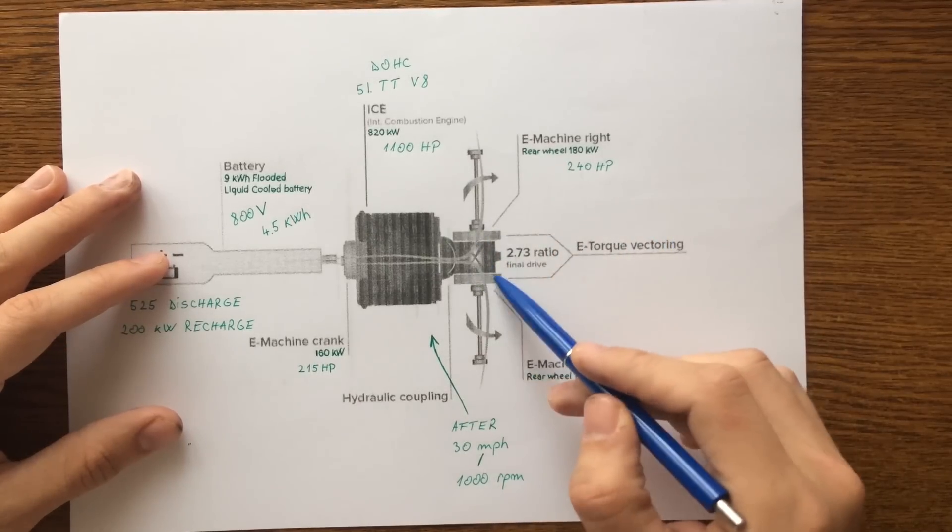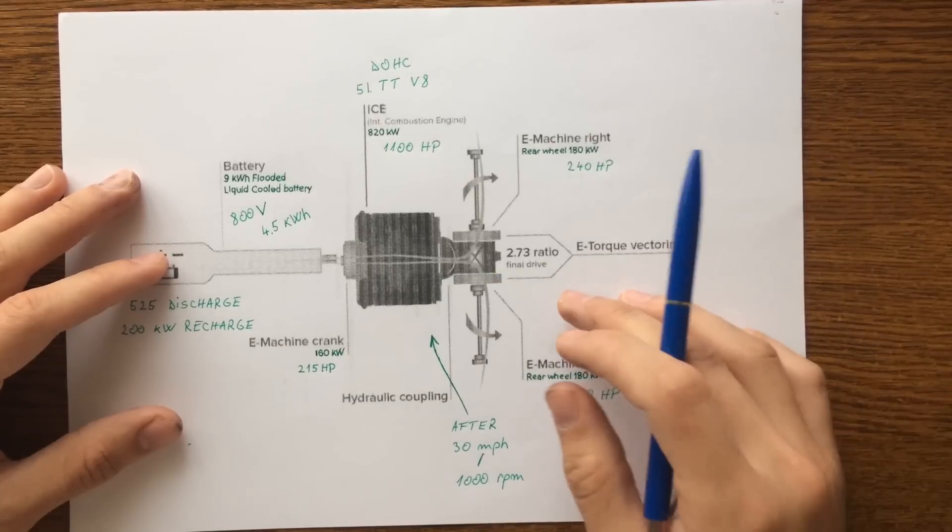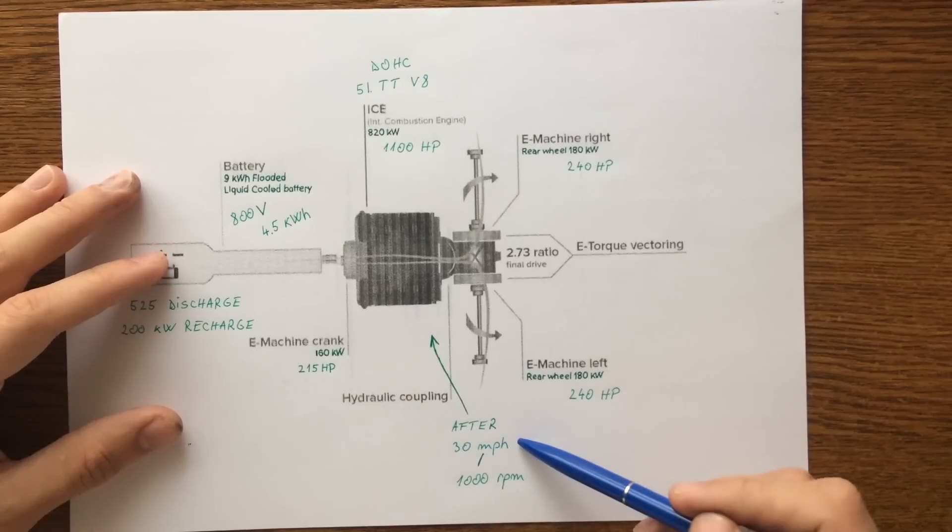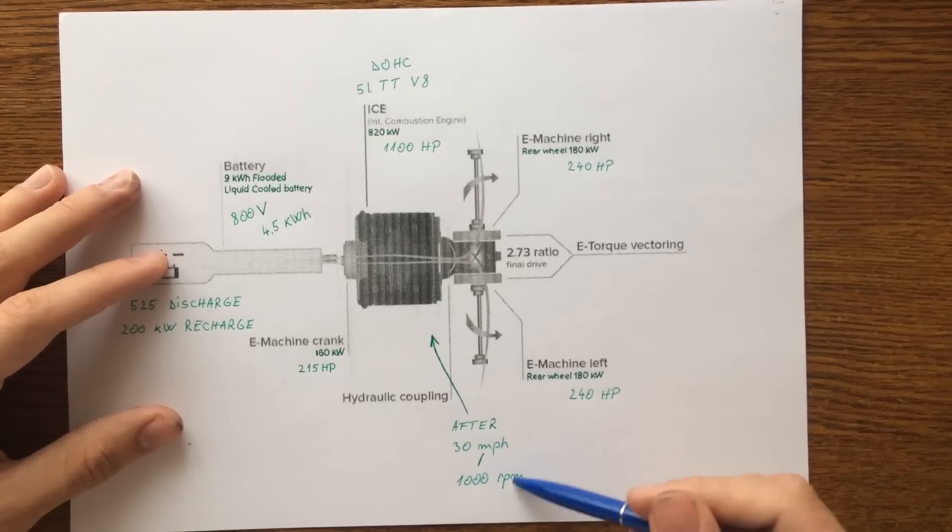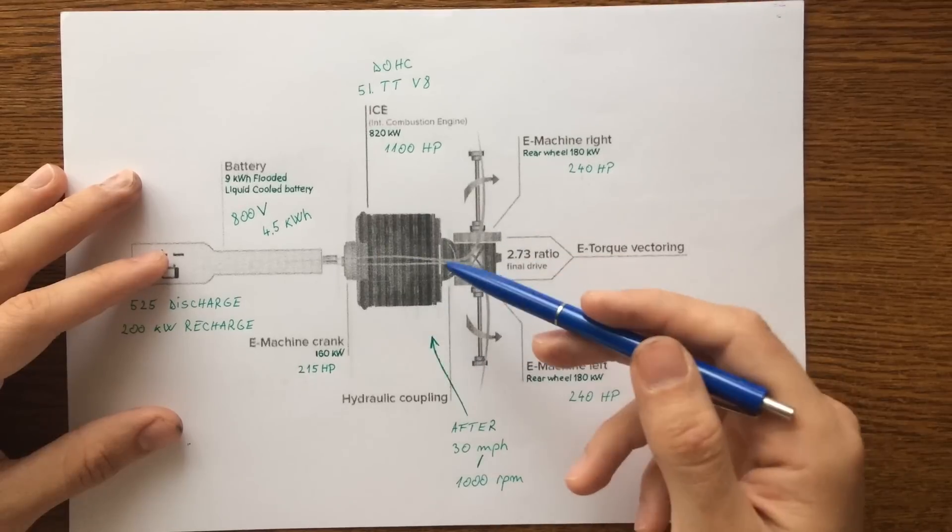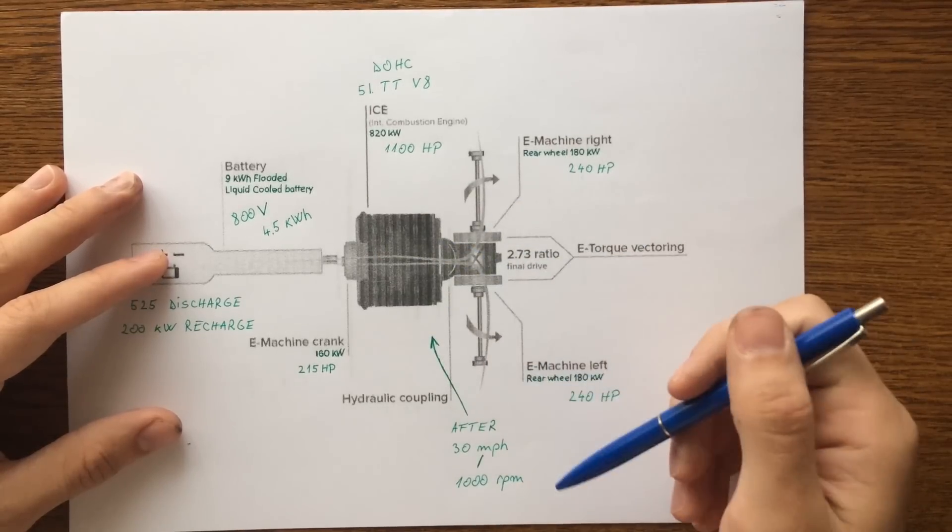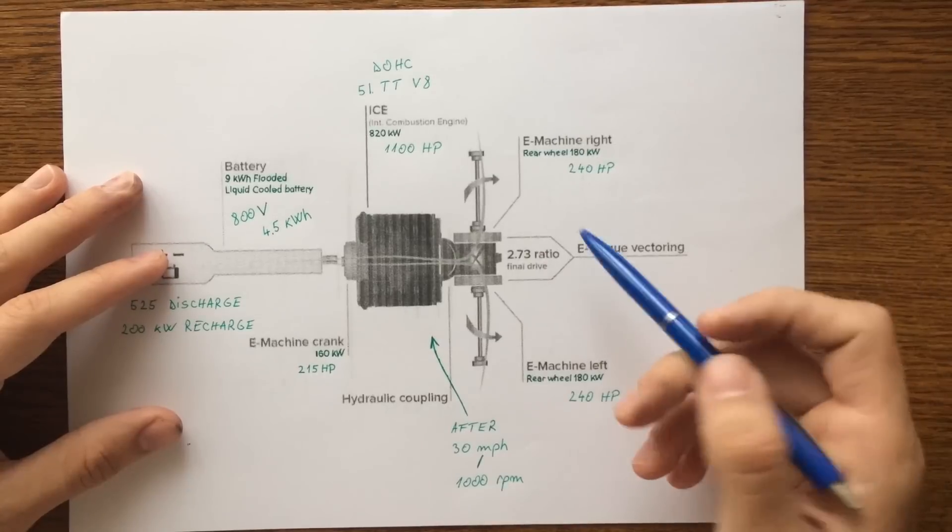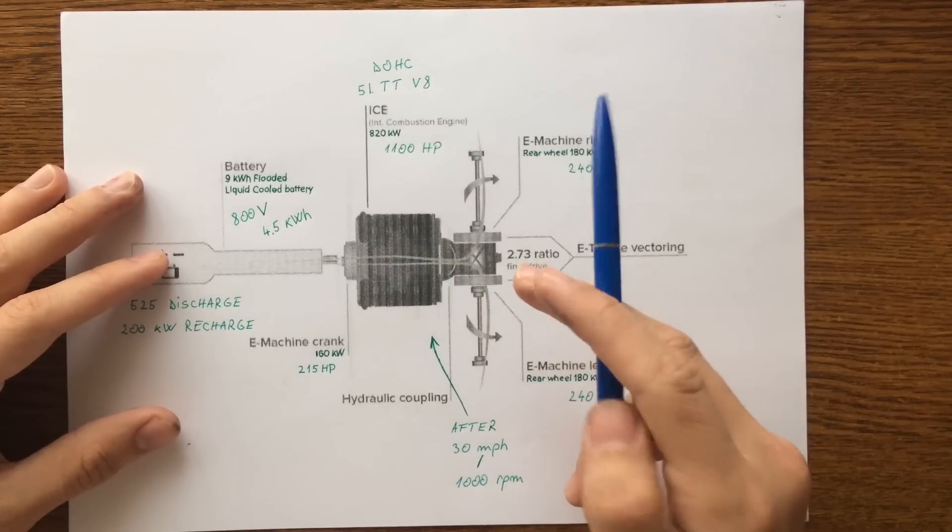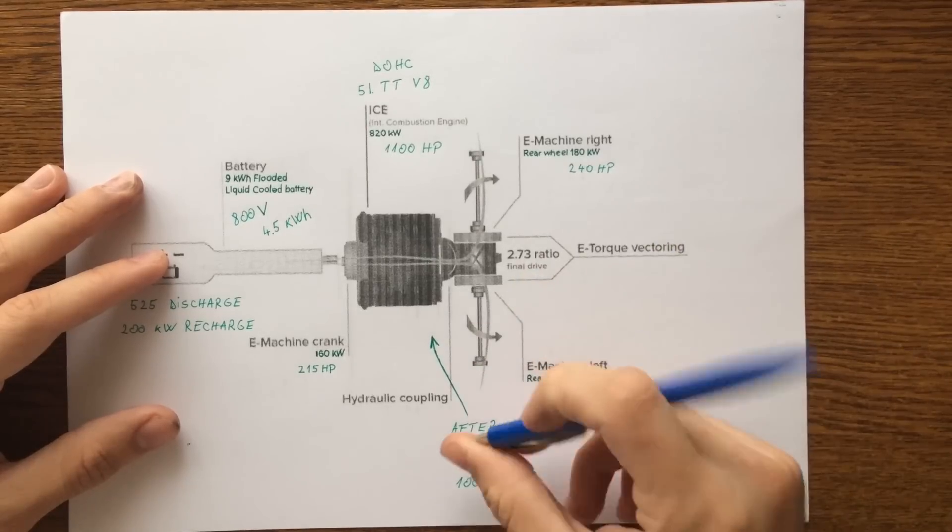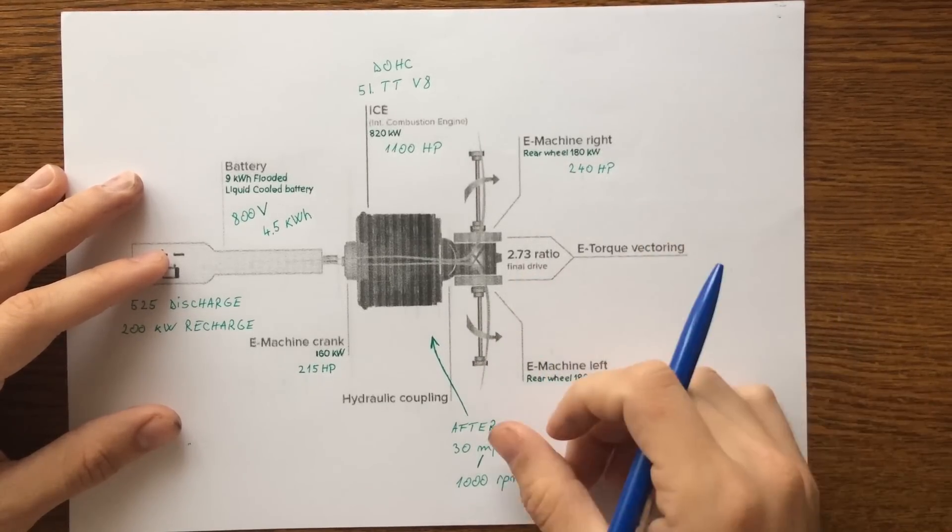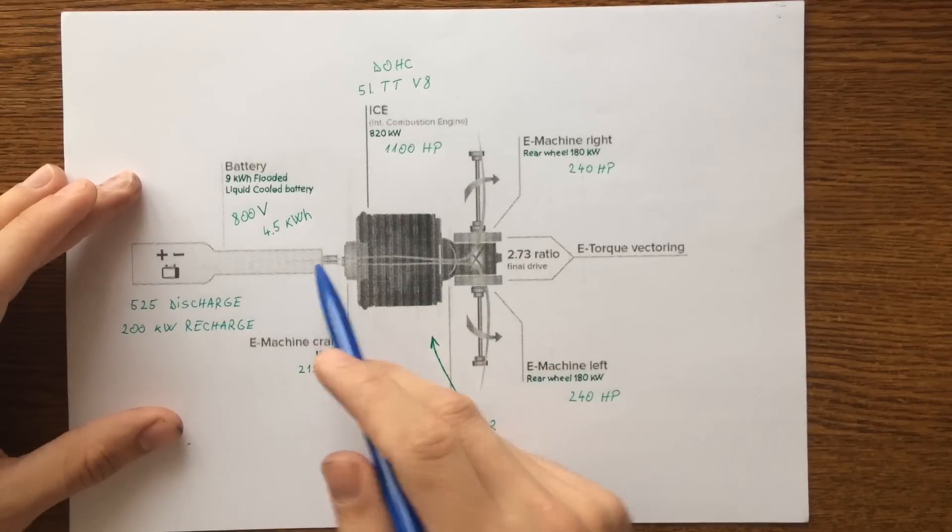These two electric motors will do the acceleration, and when the car passes over 30 miles per hour or over 1,000 rotation per minute, the main engine will transmit the power to the rear wheels. And under full acceleration, all electric motors and the combustion engine together will produce all the power. And of course under braking, the engine will act like a generator, recharging the battery.